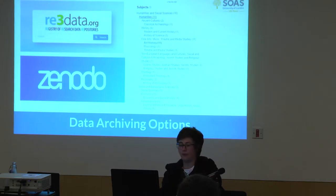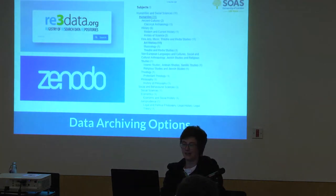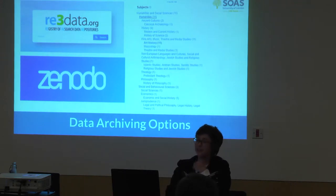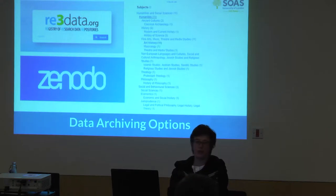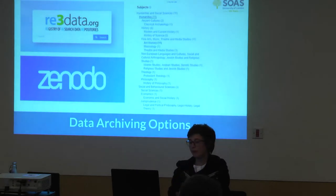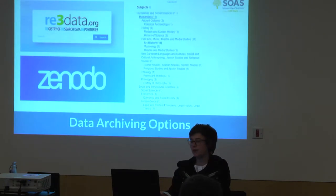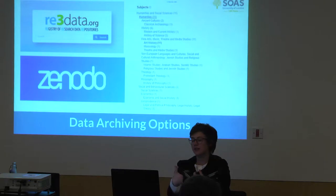This slide points out the RE3data — the research data repository search engine. It doesn't have all repositories, but you can search by discipline. It gives you links to actual repositories and information about requirements and conditions. For the ERC, they've set up Zenodo to meet funder requirements, but the ERC doesn't dictate where you put your data as long as it's in a recognised repository — and this registry is what they rely on to determine that.